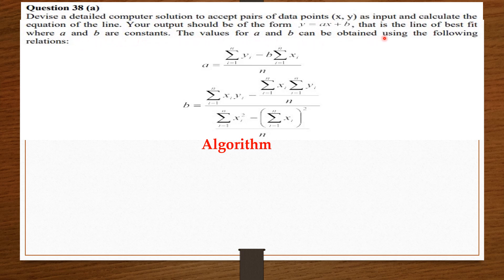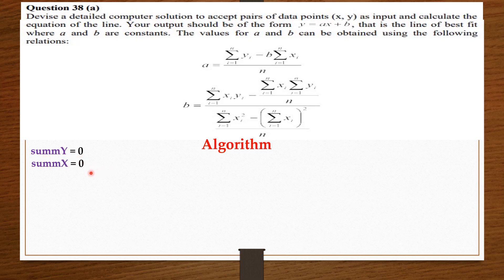The values of a and b can be obtained using the following relations. We need the summation of y values, the summation of x values, the summation of the product of x and y values, and the summation of x squared values. With these, we should be able to find a and b. So we are going to create empty variables: summation of y equals zero, summation of x equals zero, summation of the product of x and y equals zero, and summation of x squared equals zero.